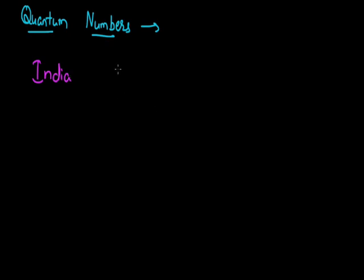To help with this, if it is further said that in India the person belongs from Jaipur, then again the information is not sufficient since Jaipur is quite a big city and it is very difficult to find out a person only by knowing the name and the city. So to know the exact locality of the person, we need to know that in Jaipur, from where they belong — what is the road number and the house number for that person.